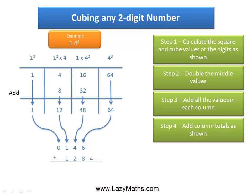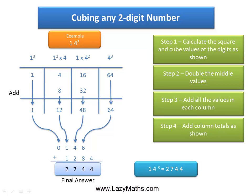Notice the way these numbers are lined up. Now start adding them and you get the final answer: 2744. So 14 cubed is equal to 2744. That's it. Thank you.